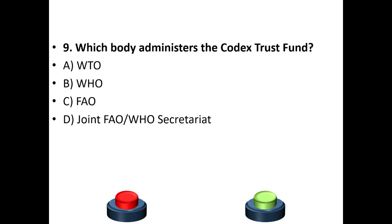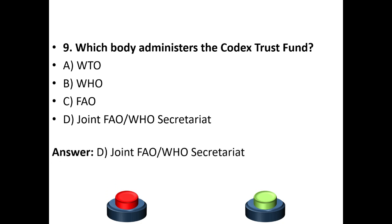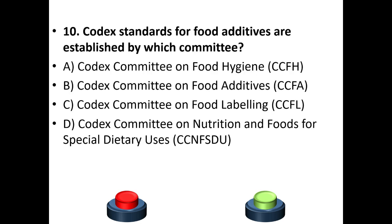Ninth question: Which body administers the Codex Trust Fund? A) WTO, B) WHO, C) FAO, D) Joint FAO/WHO Secretariat. The answer is option D — the Joint Food and Agriculture Organization/World Health Organization Secretariat.